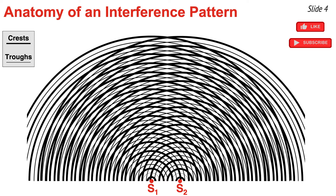This diagram depicts two sources of circular waves, S1 and S2, and shows the waves spreading out through the surrounding space and interfering with one another. The crests are noted by the thick lines, and the troughs are the thinner lines. If I look down the center of the pattern, I'll notice a whole collection of points where crests are always meeting up with crests. And in between these marked points, there are also locations where troughs are meeting up with troughs.